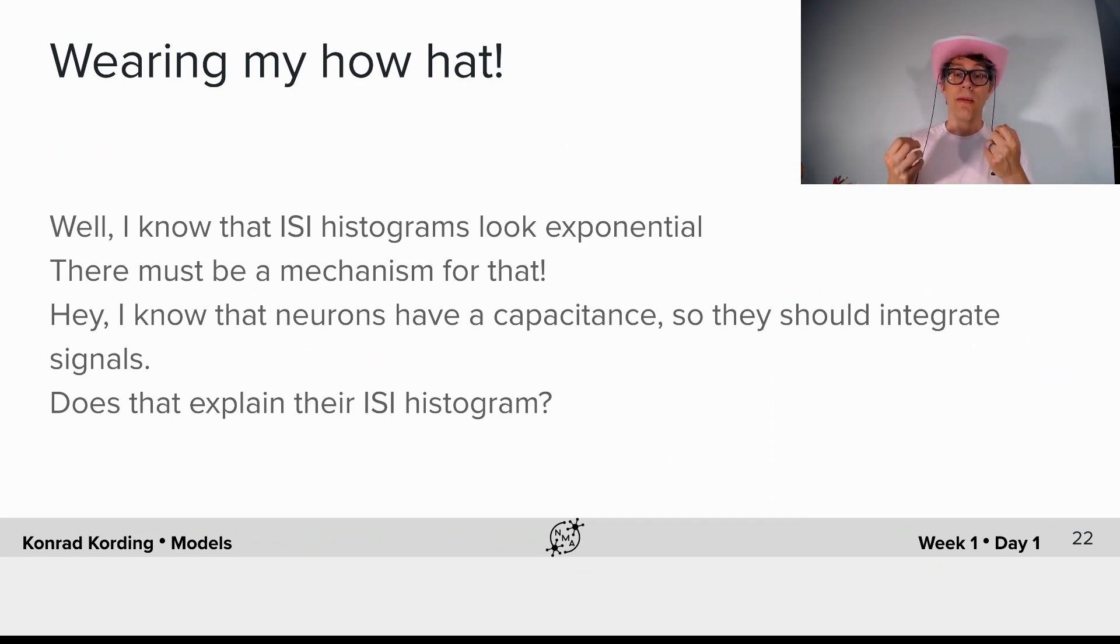How could I start? Well, I do believe that neurons have capacitance, so they should integrate signals. And does the fact that neurons integrate signals that they receive from other neurons explain the inter-spike interval histogram?